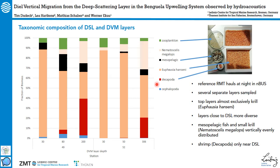Euphausia hanseni, which is a large krill species, makes up the surface layers — up to 90% of the biomass. Whereas decapods stay at depth and do not migrate. Mesopelagic fish can be found at almost every depth and are more evenly distributed through the water column, which confirms what we saw from other RMT hauls. We also have a smaller krill species, Nematoceras megalops, which is more evenly distributed in the water column but shows some signs of migration.